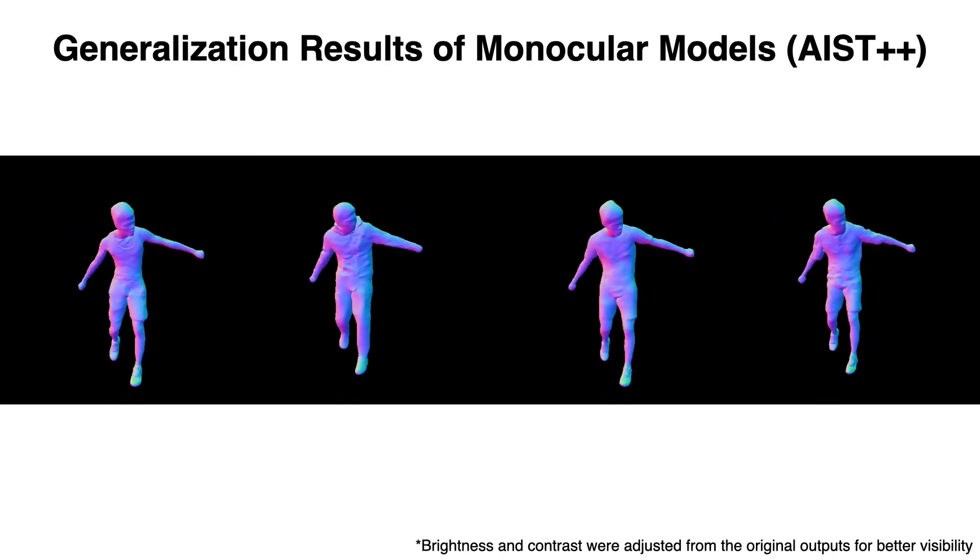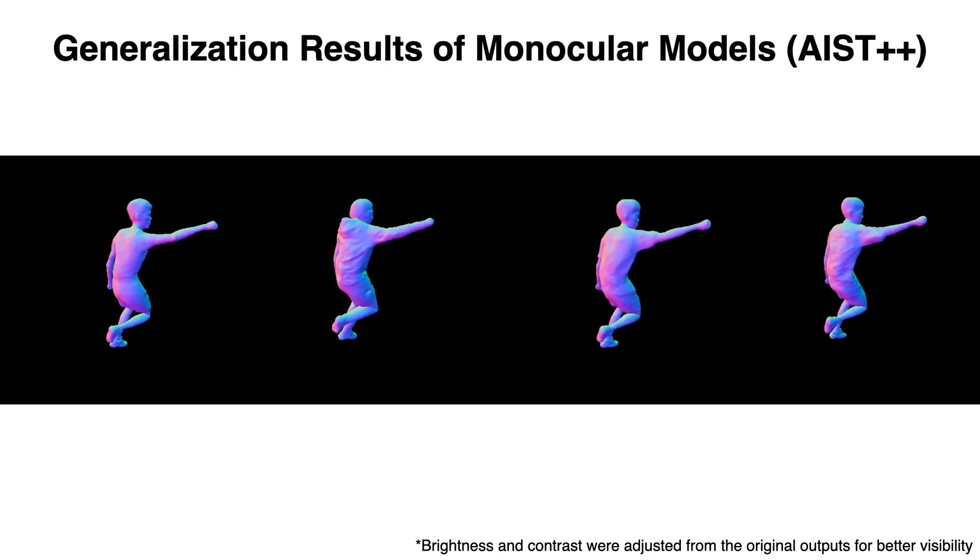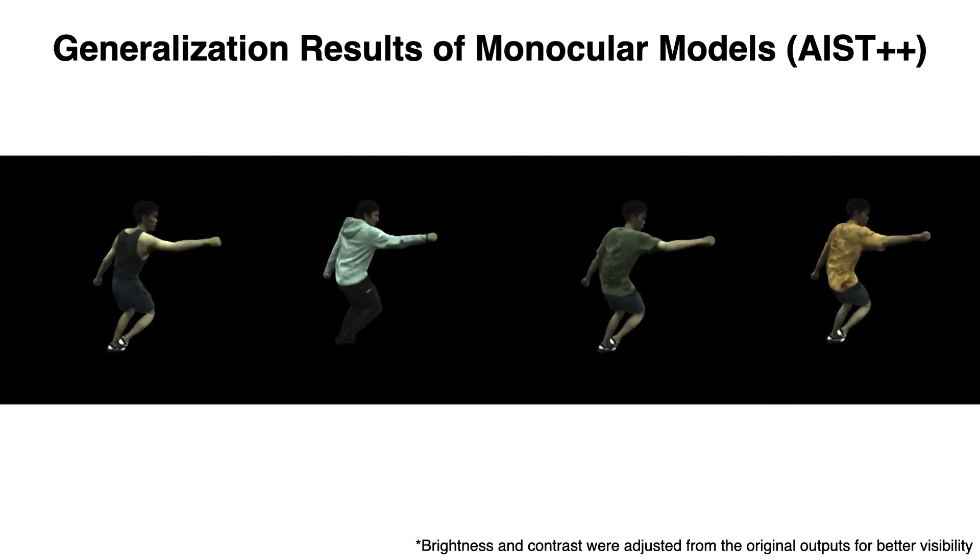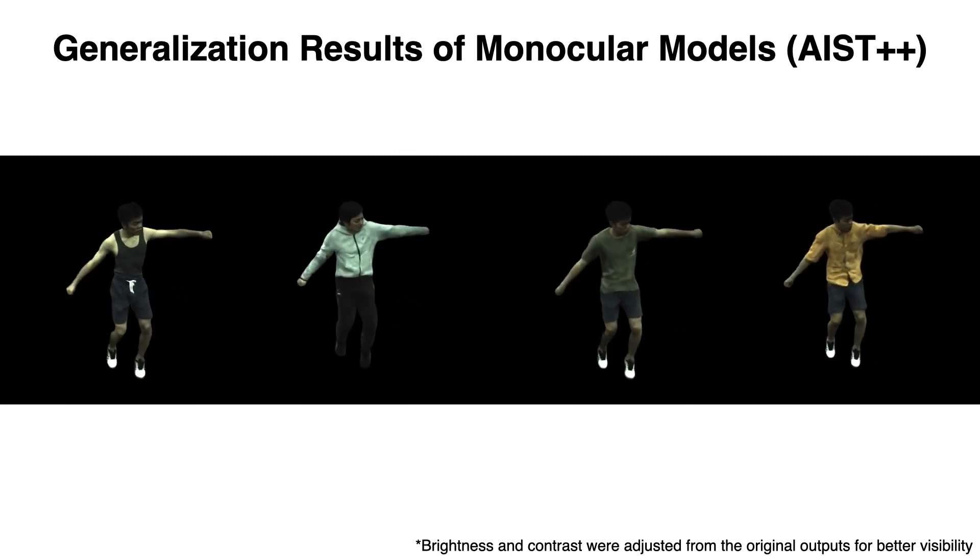We also show results on models trained from monocular videos. Even trained from a single view, our model can still produce plausible pose-dependent geometry and appearance on out-of-distribution poses.